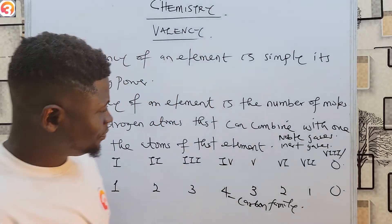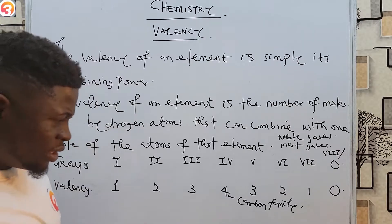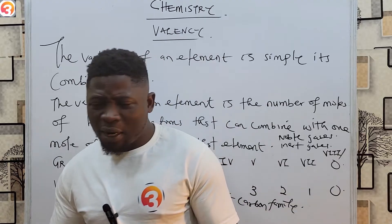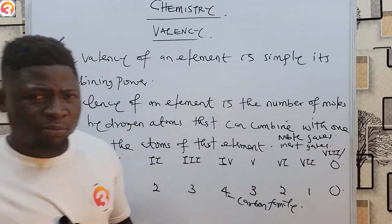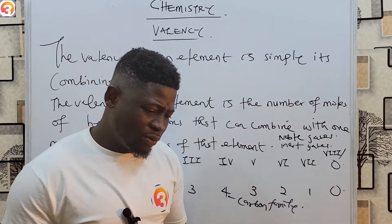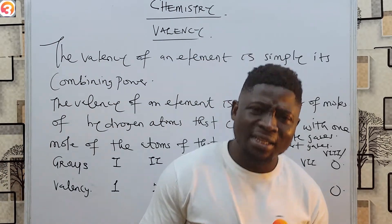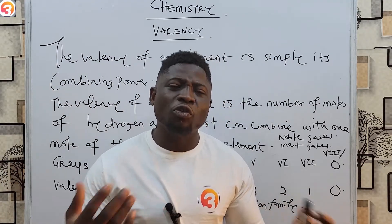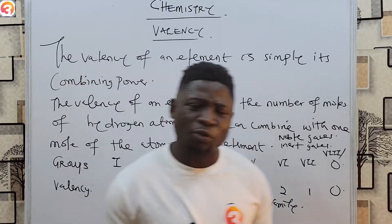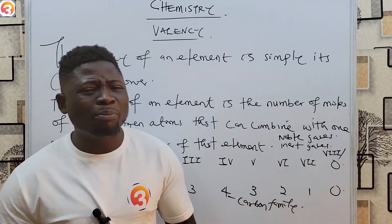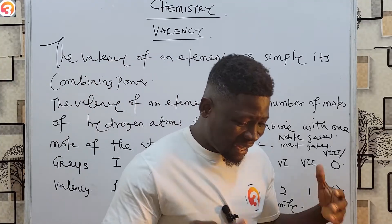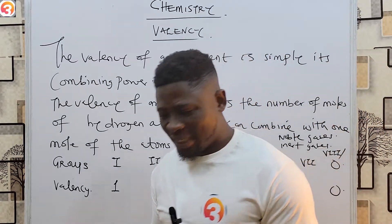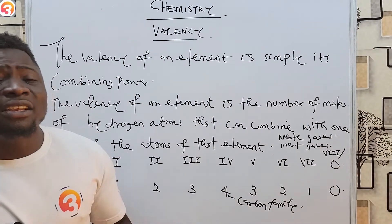Now, why do we need to know the valency of elements? Because valency represents the combining power of elements, knowing the valency of elements can help us predict the formula of the compound formed when elements combine. This is one of the very important reasons why we must understand valency very well — the formula of a compound can be predicted from the valency.